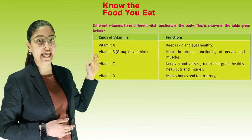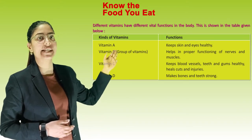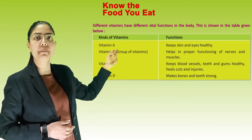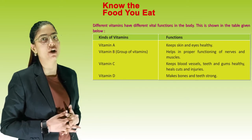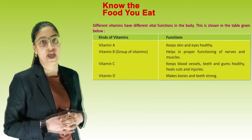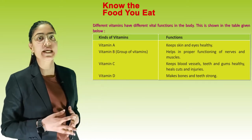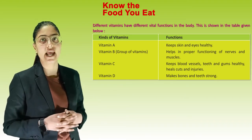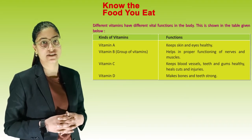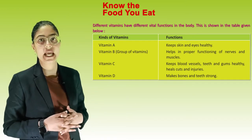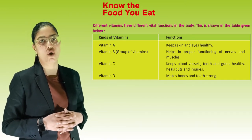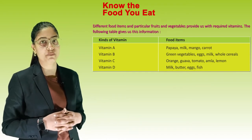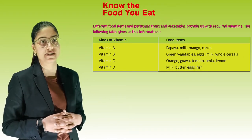Vitamin A keeps skin and eyes healthy. The Vitamin B group of vitamins helps in the proper functioning of nerves and muscles. Vitamin C keeps blood vessels, teeth and gums healthy and heals cuts and injuries. Whereas Vitamin D makes bones and teeth strong.